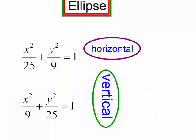The x-squared term has a larger denominator, so it is a horizontal ellipse. Or we could say that the major axis is horizontal. In this ellipse, the larger denominator is under the y-squared term, so it is a vertical ellipse. I could also say the major axis is vertical.